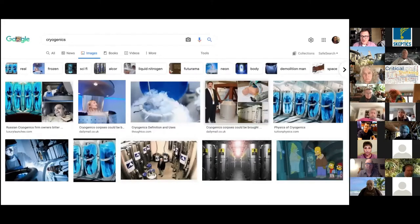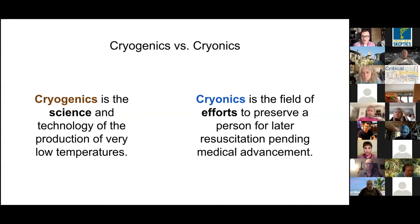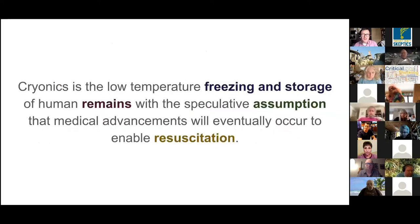First things first — I actually used the wrong term in my initial description. If you search for cryogenics on Google image search, you get the idea of what I'm talking about today, but technically that's not cryogenics. There's cryogenics and there's cryonics. Cryogenics is a real science about things that happen at low temperatures. Cryonics, on the other hand, is the effort to preserve a person for later resuscitation — specifically, the low-temperature freezing and preservation of human remains. It's speculative; no one has ever been brought back yet.